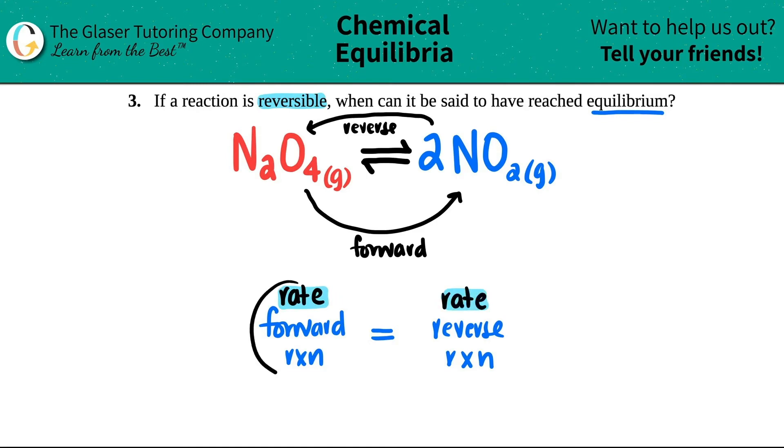If the forward reaction is moving at a speed of, you know, 2 molarity per second, and the reverse reaction is happening at the same speed or the same rate, 2 molarity per second, you're not going to get anywhere. They're equal. That's equilibrium.